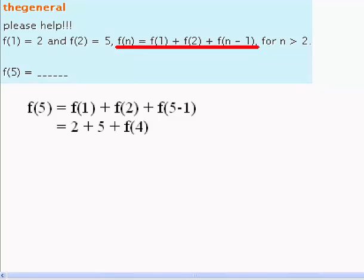Since we know that f(1) = 2 and f(2) = 5, f(5) = 2 + 5 + f(4). This then reduces to 7 + f(4).